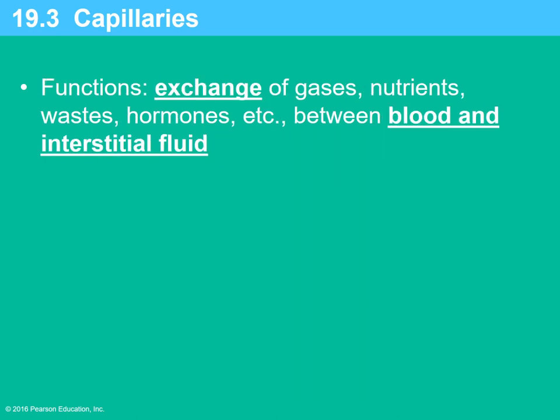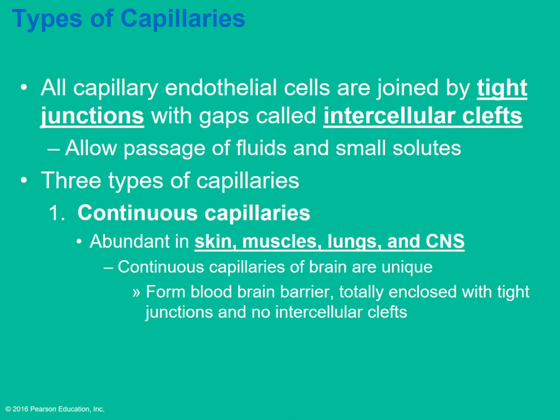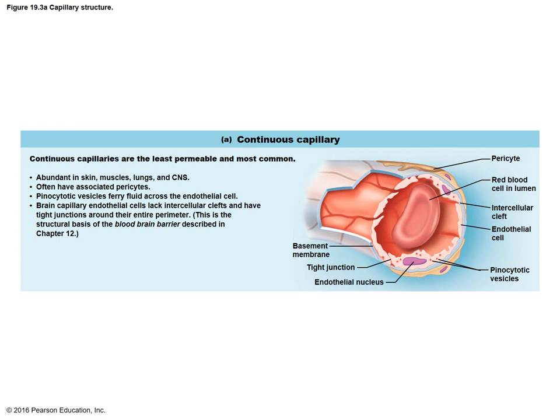The function of capillaries is for exchange to occur. Capillary epithelial cells are joined by tight junctions but have little gaps allowing fluid and cells to pass. There are three main types of capillaries. Continuous capillaries are very common in the skin, muscles, lungs, and central nervous system. In the brain, they have unique functions due to the blood-brain barrier, with no intracellular gaps — they're totally enclosed within tight junctions for extra protection.